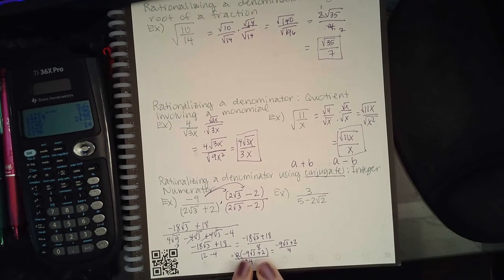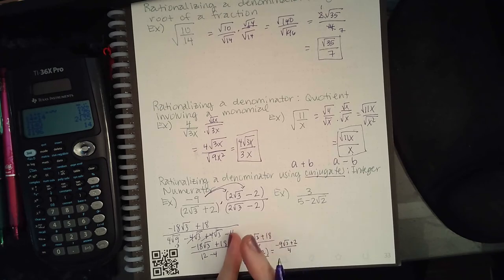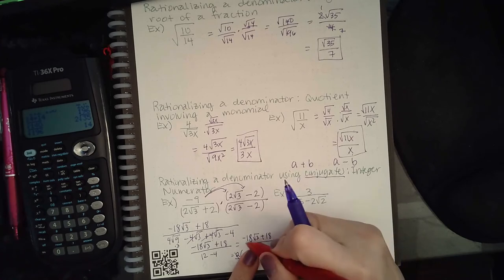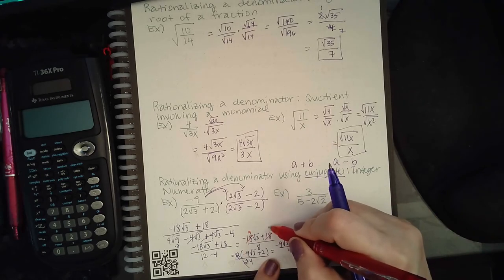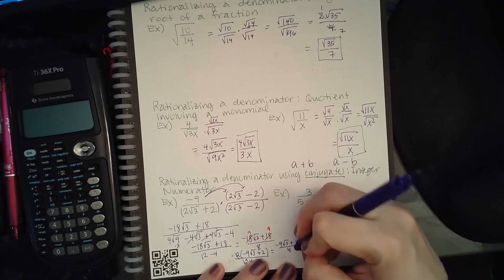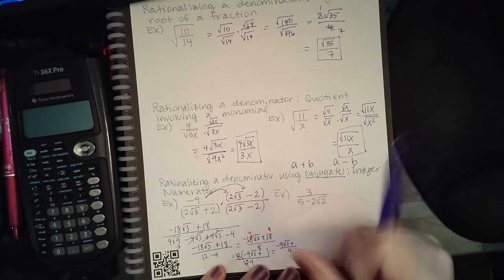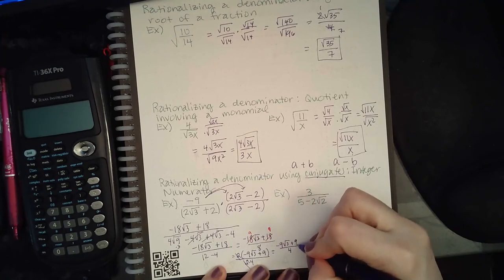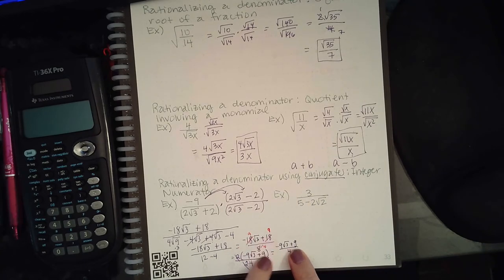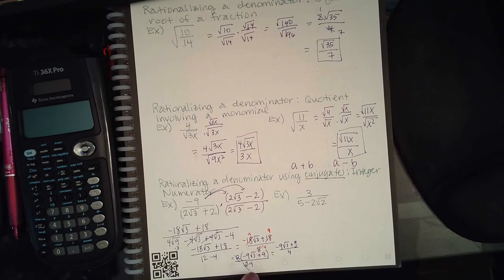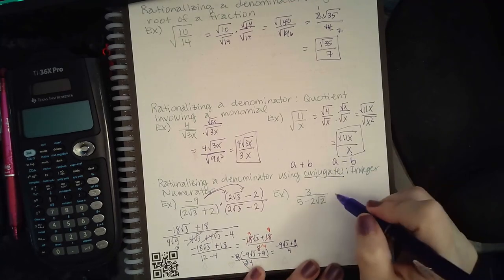A faster way to reduce without factoring: when you reduce a fraction, reduce every single term by the same number. If I reduce 18 by 2 I get 9, giving negative 9 with square root of 3 attached. If I reduce the other 18 by 2 I get 9. At the bottom, reducing by 2 gives 4. So I have negative 9 square root of 3 plus 9 over 4. You can't just reduce one term in the front and not the other — you must reduce every single term by the same amount.